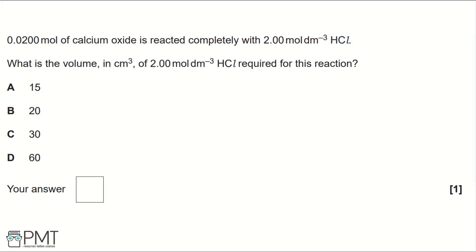0.02 moles of calcium oxide is completely reacted with 2 moles per decimetre cubed of hydrochloric acid. What is the volume in centimetres cubed of 2 moles per decimetre cubed hydrochloric acid required for this reaction?